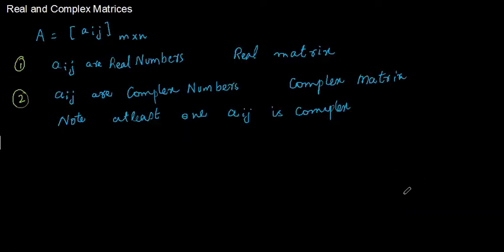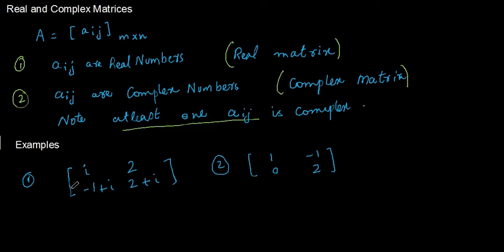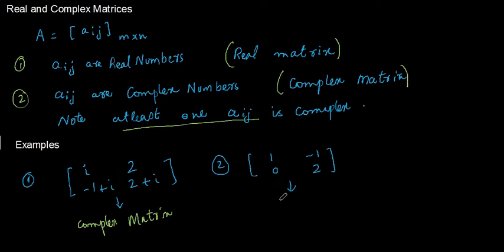A matrix is a real matrix if all its elements are real numbers. It is a complex matrix if at least one element is a complex number. Note that real numbers are also complex numbers with imaginary part equal to 0. In the first example, there are complex elements so it is a complex matrix. In the second example all elements are real, so it is a real matrix.